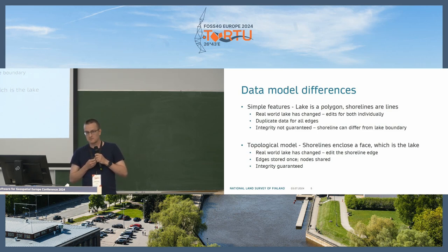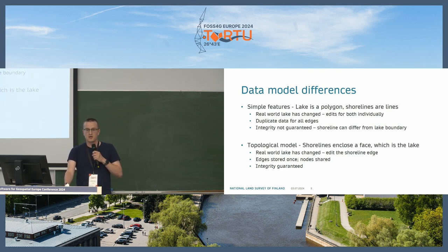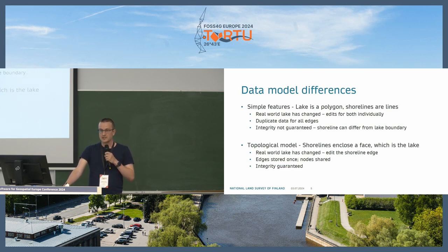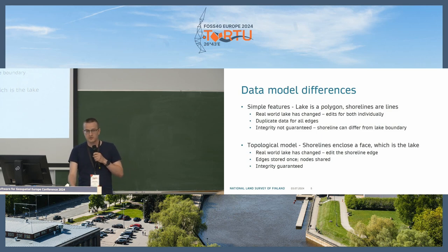The shoreline can — and possibly in some cases will — differ from the lake boundary if edits are not done correctly. In the topological model, the shorelines enclose a face which is the lake. When the real-world lake changes, edits are done only on the shoreline edge. The edge is stored only once and nodes are shared for adjacent features. Because of that, the integrity of the data is guaranteed so that the shoreline and the lake are at the same location.